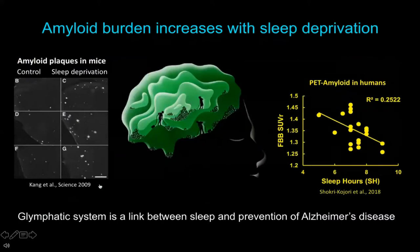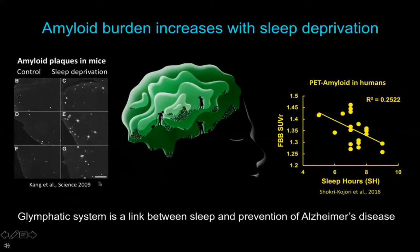There are some very interesting links between sleep and neurodegeneration that the glymphatic system might be able to explain. Sleep deprivation in Alzheimer's mice causes exacerbation of plaque load. Also in humans, it was shown that the more hours we sleep, the less amyloid we have in the brain. So the glymphatic system sparked new interest in sleep as a way to prevent Alzheimer's disease.